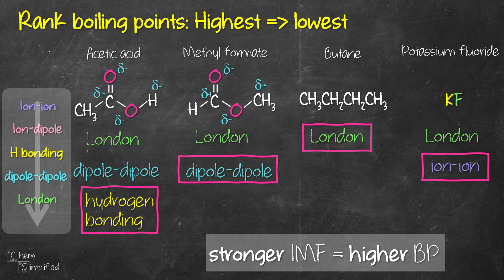Now that we've already identified the strongest intermolecular force in each of these compounds, we can now go ahead and rank them. So we'll number one for KF, two for acetic acid, three for methyl formate, and then four for butane. So we're ranking the strongest intermolecular forces that's present in each of these compounds.